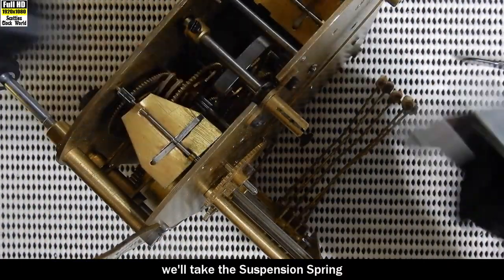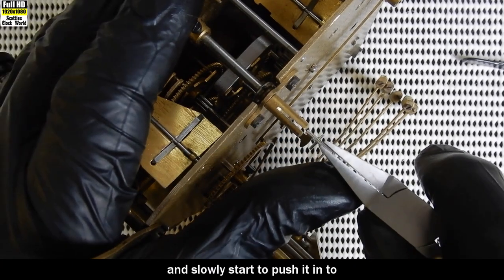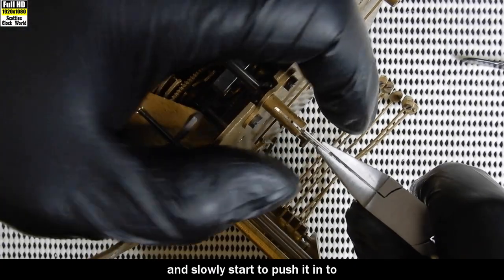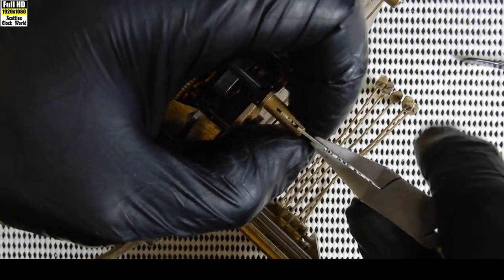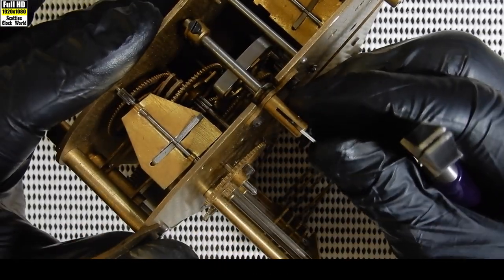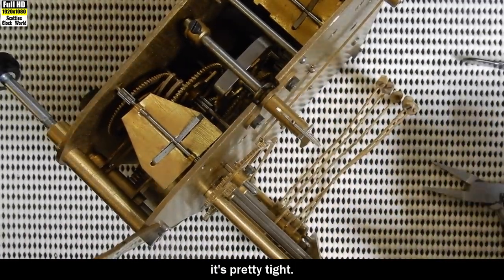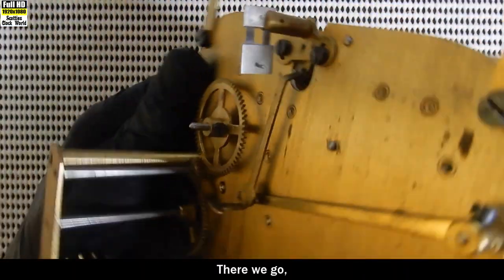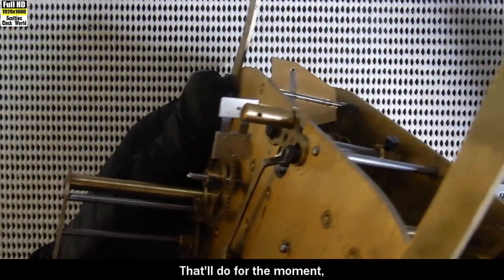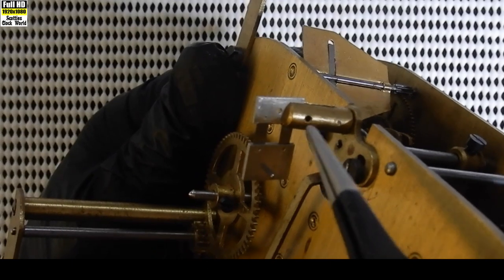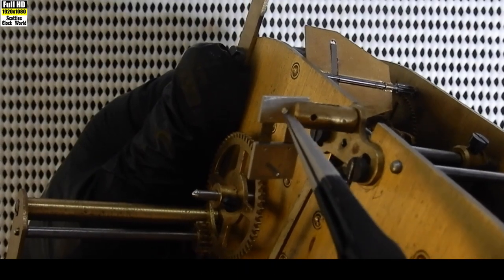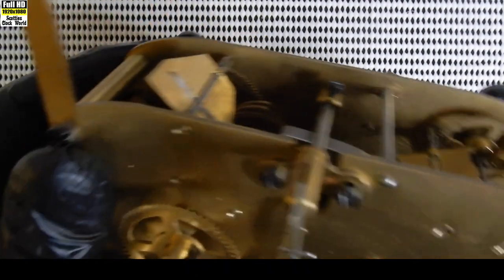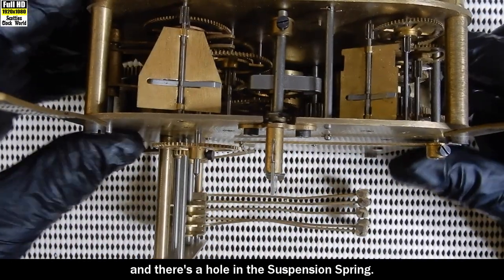We'll take the suspension spring. Slowly start to push it into the back cock. It's pretty tight. There we go. We've got to start. That'll do for the moment. We'll turn it over. And you can see there, there's a hole in the back cock. And there's a hole in the suspension spring.